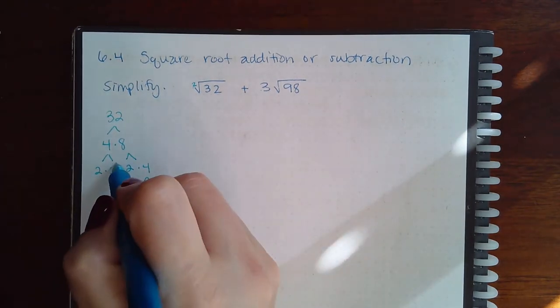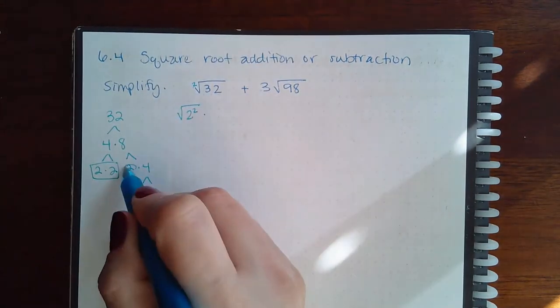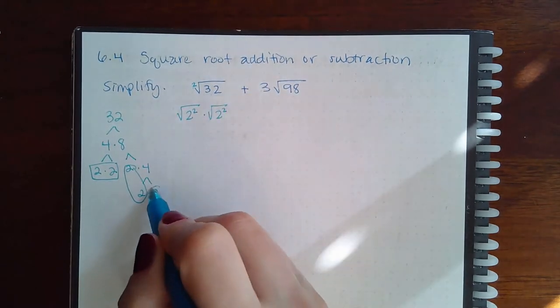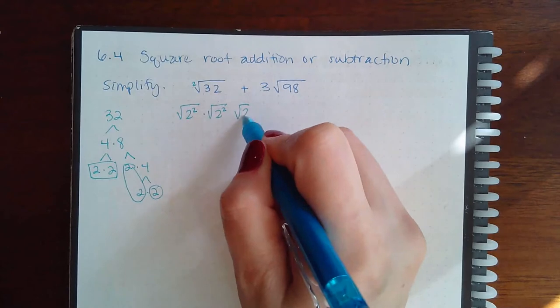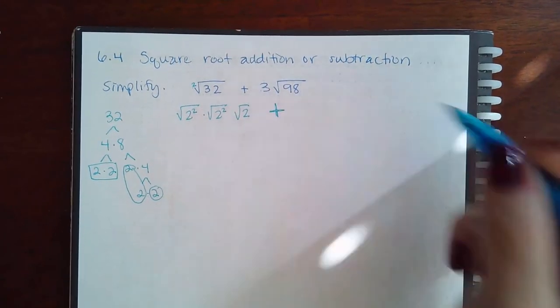So I have a pair of twos here, so I'm going to have square root of two squared. I have a pair of twos here, so another square root of two squared, and then a leftover two, so the square root of two.